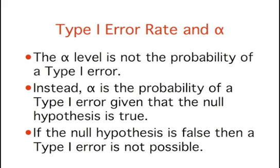It might seem that alpha is the probability of a Type I error. However, this is not correct. Instead, alpha is the probability of a Type I error given that the null hypothesis is true. If the null hypothesis is false, then it is impossible to make a Type I error.